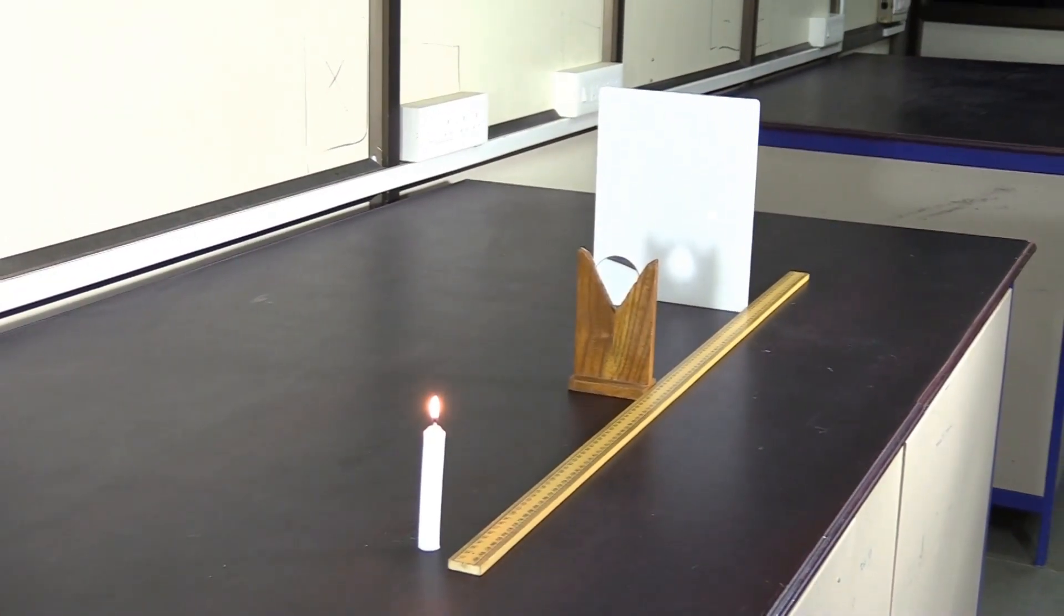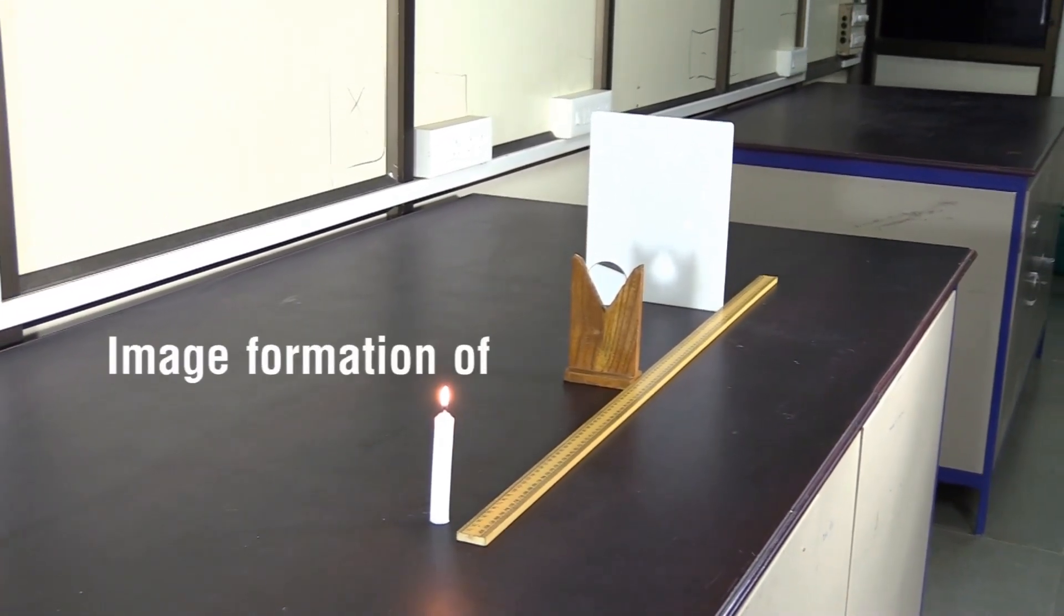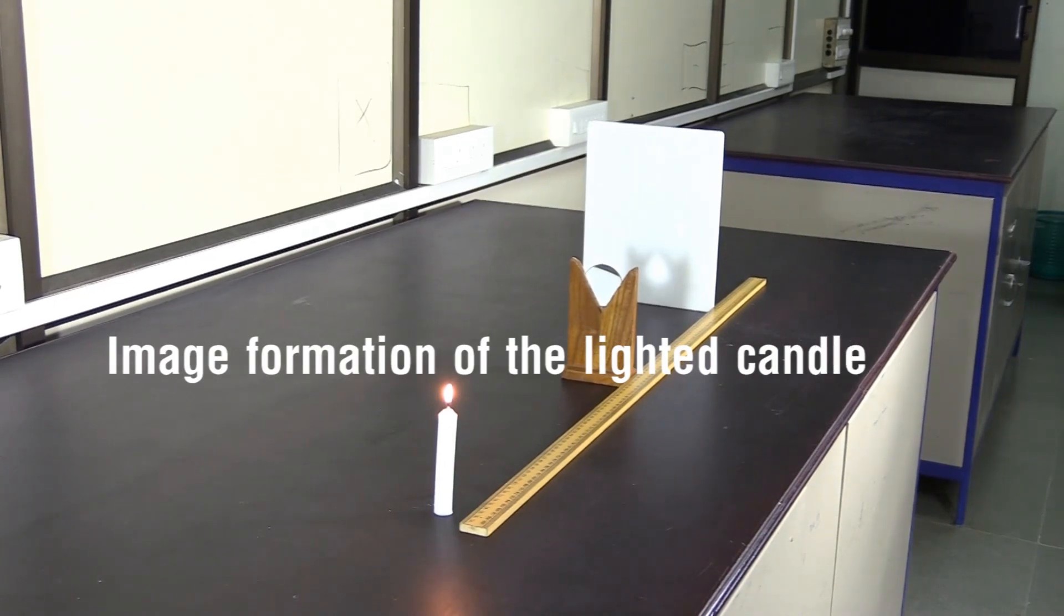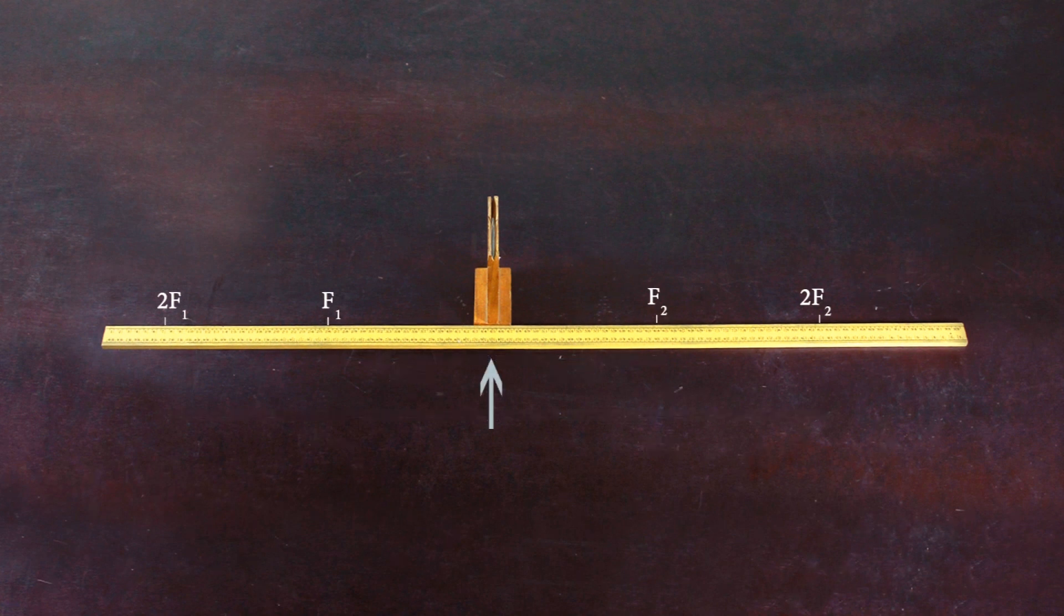Now let us study the nature, position, and relative size of the image formed by a convex lens for various positions of the lighted candle. Mark the points F1, 2F1, F2, and 2F2 on either side of the convex lens.